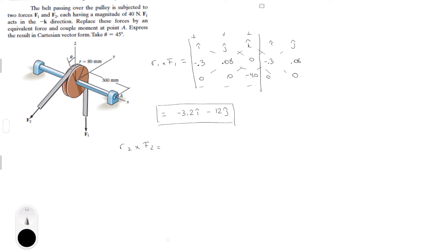R2 cross F2 equals the determinant with I, J, K in the first row, minus 0.3, minus 0.057, 0.057 in the second row, and 0, minus 28.3, minus 28.3 for F2 in the third row. F2 is negative, negative because it's going down and back. Rewrite first and second column. First positive diagonal is 1.61I. Second positive diagonal is 0. Third positive diagonal is plus 8.49K.